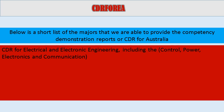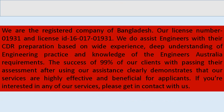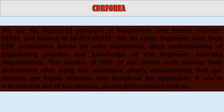CDR for electrical and electronic engineering, including control, power, electronics and communication. CDR for civil engineering. CDR for mechanical engineering. CDR for instrumentation. CDR for industrial engineering. CDR for textile engineering. We are a registered company of Bangladesh. Our license number is 01931 and license ID 16-017-01931. We assist engineers with their CDR preparation based on wide experience, deep understanding of engineering practice, and knowledge of Engineers Australia requirements.